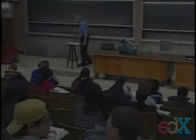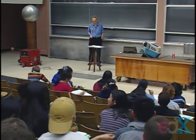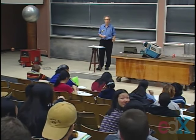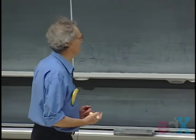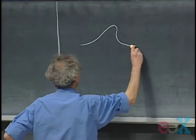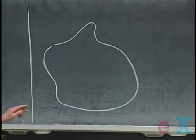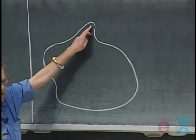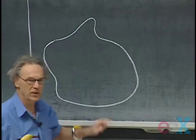Last time I mentioned that charge resides at the surface of solid conductors, but it is not uniformly distributed — unless it happens to be a sphere. I want to pursue that today. If I had a solid conductor with this shape, the surface charge density will be higher here where the curvature is stronger than it is there.